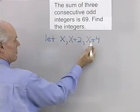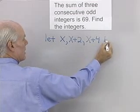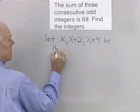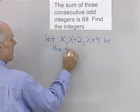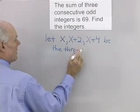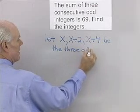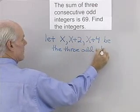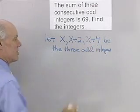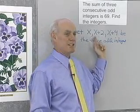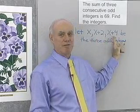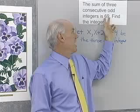So let's let x, x plus 2, and x plus 4 be the three odd integers. So I'm saying x, x plus 2, and x plus 4 are the consecutive odd integers.